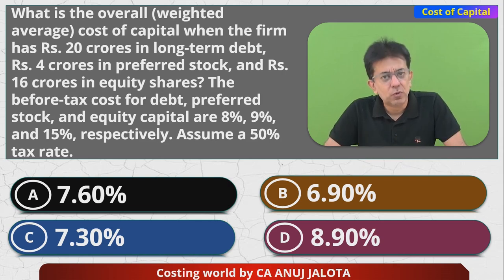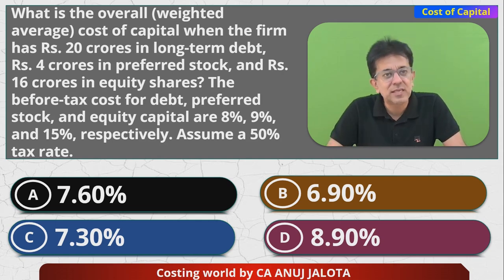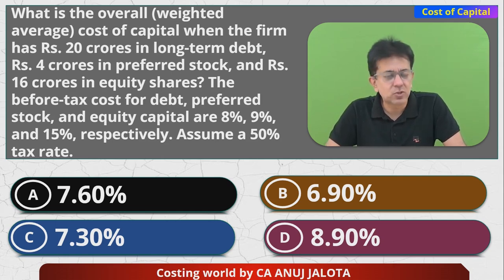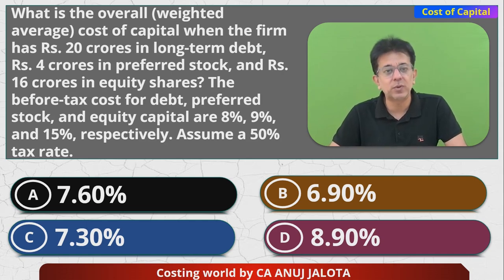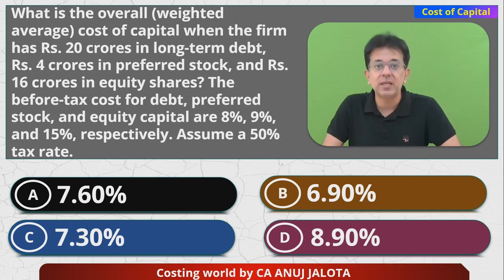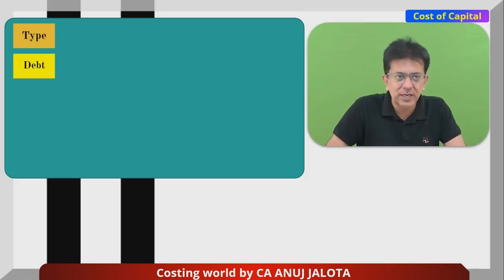Now you would have done that. It's only about making the table and getting the answer. One small thing: Kd — the rate of interest is 8%, but that is not your Kd because that is before tax. You want everything after tax. So 8 × (1 − 0.50) = 4%. Therefore Kd = 4%. Now let's start making the table.